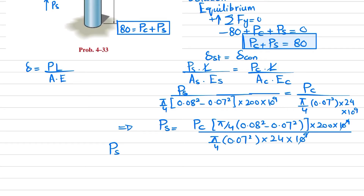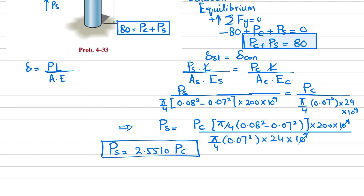Simplifying, we get Ps = 2.5510 Pc. Let this be equation two.